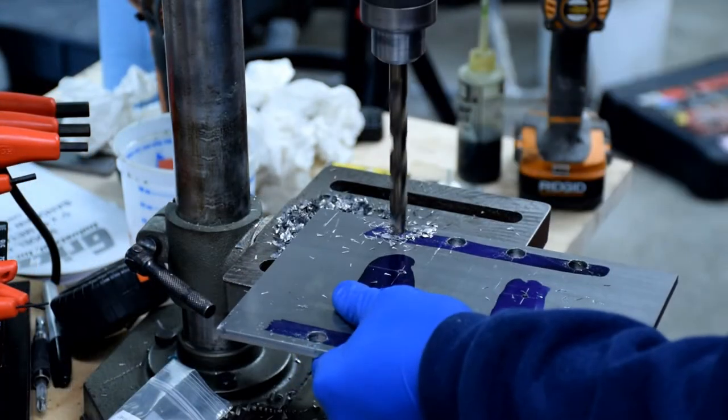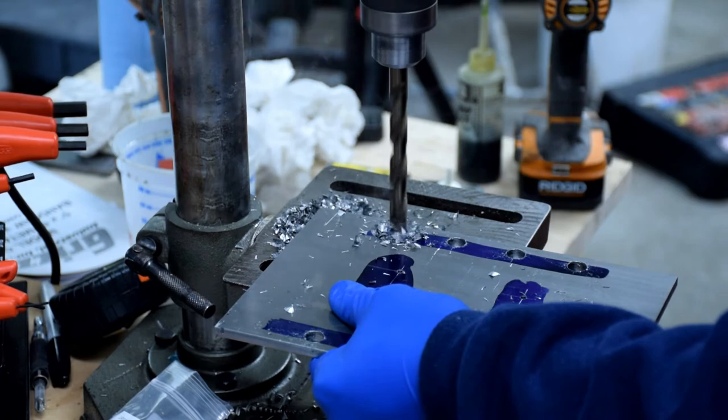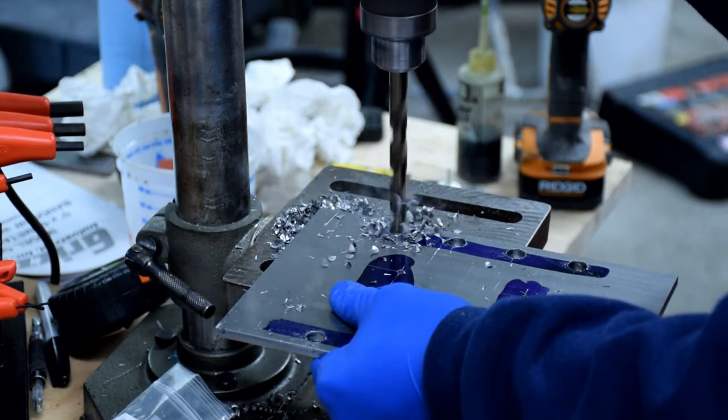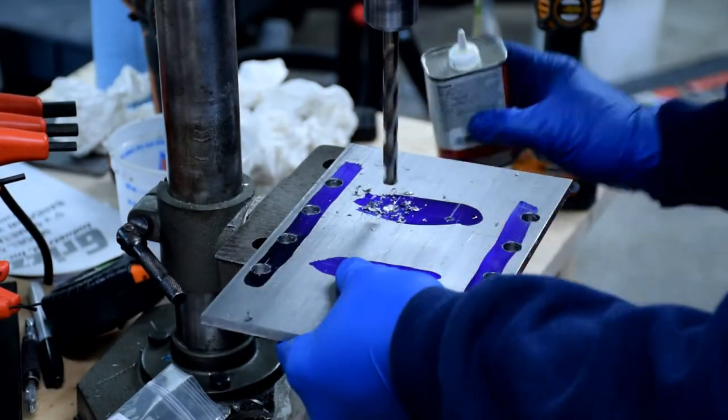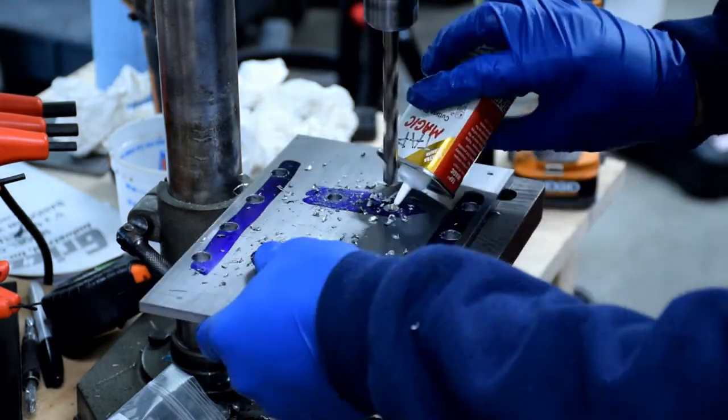Using a 7-16 inch drill bit, drill out the holes along the edge of the plate. Next you'll drill out the center holes with a 3-8 inch drill bit.